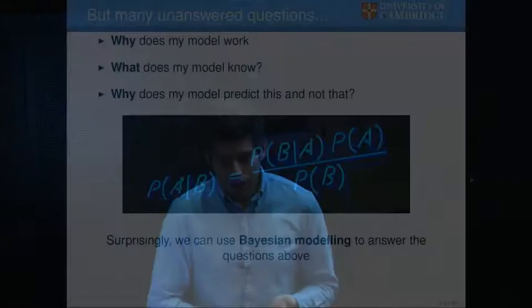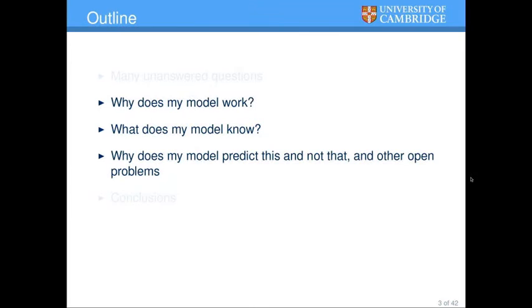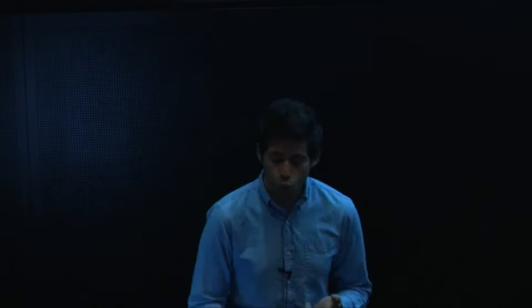If you work in medicine, physics, or biology, you need to understand why your model predicts a certain output. A physician would rather use a decision tree that is more interpretable, where you can understand each step of the decision-making process, than use a black box. Perhaps surprisingly — or maybe not, given the title of the talk — we can attempt to answer these questions using Bayesian modeling. Over the next 40–45 minutes we're going to try to answer these three questions.